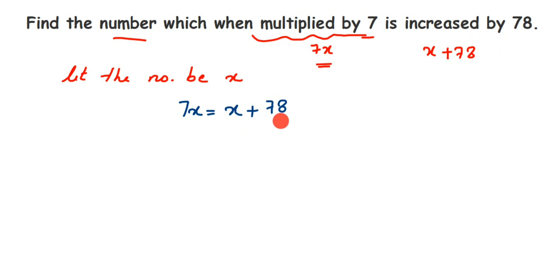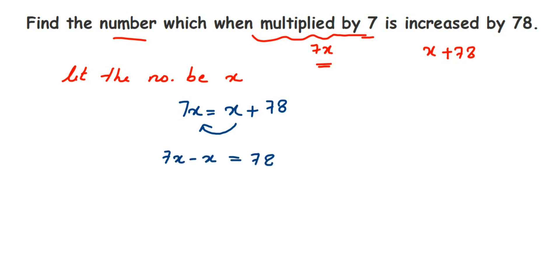Now we have to find the value of x. We bring all the variables to one side, taking x to the left side. When you transpose, the sign changes — positive x becomes negative. So 7x minus x equals 78, which gives us 6x equals 78.